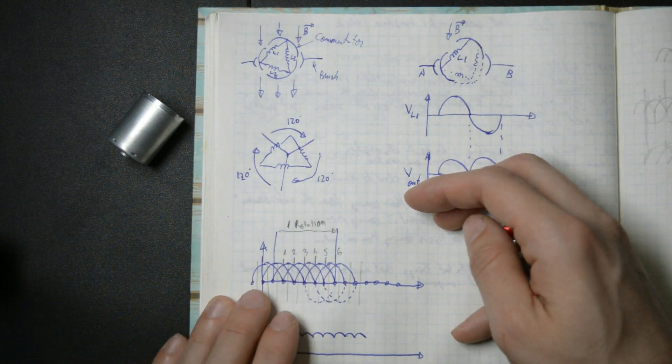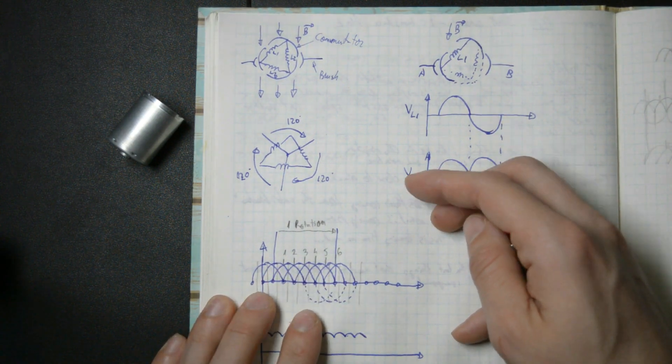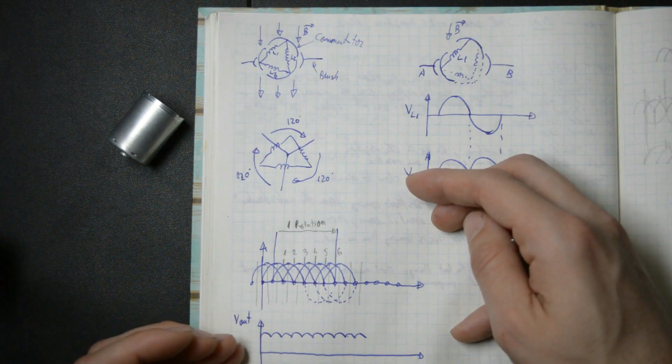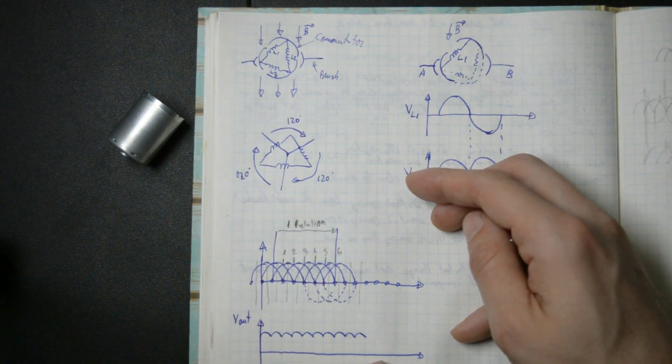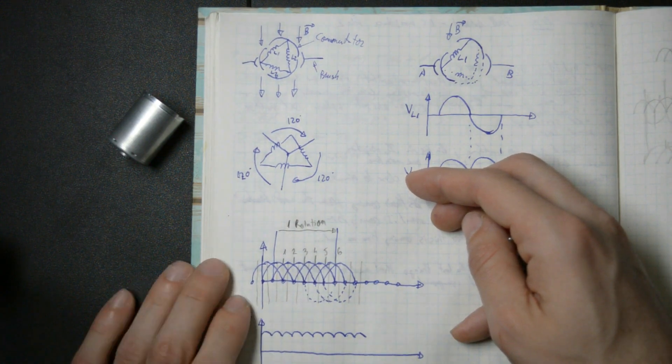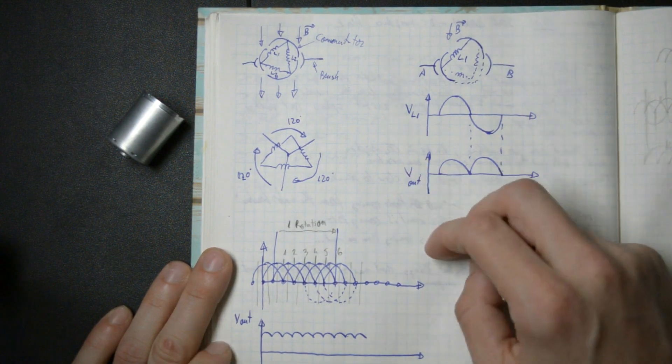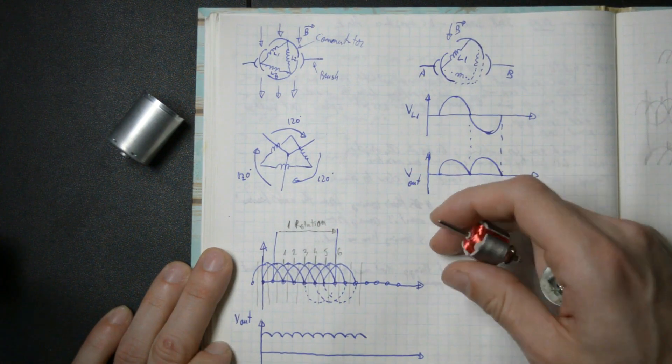And during one complete rotation, we end up having the six transitions from one to the other. Now, since these coils are only connected to the terminals for a slight amount of time, our output voltage ends up looking like this. So, we've got a small little bumpy output voltage. Basically, it looks like six phase AC rectified, just like we got on our oscilloscope.